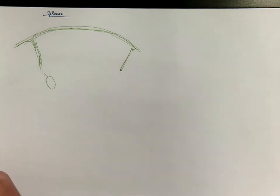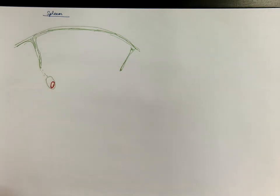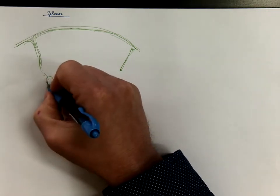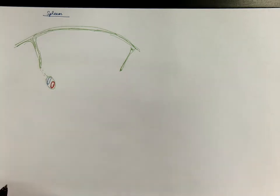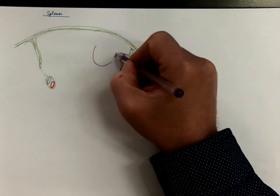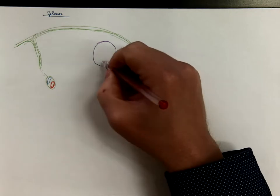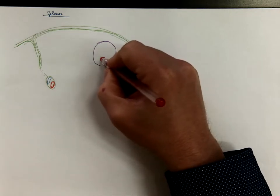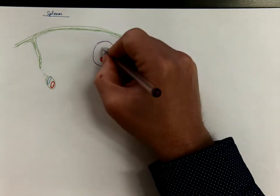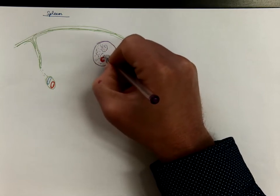That's where you will find also the trabecular arteries and trabecular veins. The inner space contains ellipsoid structures with blood vessels — these are lymphoid follicles. Mostly there is a lighter center somewhere: it's a germinal center. And otherwise there are lymphocytes everywhere.